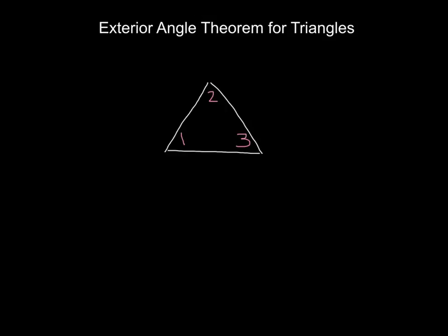An exterior angle of a triangle is an angle outside of the triangle created by extending one of the sides of the triangle. So in this diagram, we can extend this side of the triangle to make angle 4, which is our exterior angle.